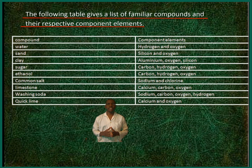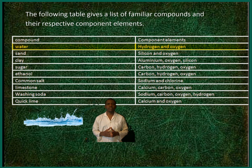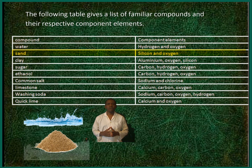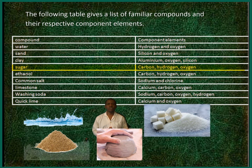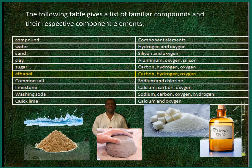The following table gives a list of familiar compounds and their respective component elements. Water contains hydrogen and oxygen. Sand contains silicon and oxygen. Clay contains aluminum, oxygen, silicon. Sugar contains carbon, hydrogen, oxygen. Ethanol contains carbon, hydrogen and oxygen.